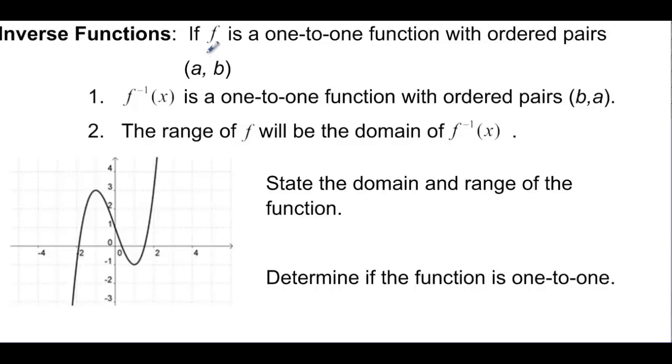So inverse functions. An inverse function has to be one-to-one. And it's going to be a one-to-one function that has ordered pairs (a, b). So the inverse function, and this is inverse function notation right here. And I want you to understand, you've probably heard this before, but f inverse of x is not equal to one over f of x. This doesn't mean f to the negative first. This is just the way we write inverse function notation. When we look at this, if we have a function that's one-to-one with ordered pairs (a, b), then the inverse function is going to have ordered pairs (b, a). And the range of f will be the domain of the inverse function, and the opposite is also true, the domain of f will be the range of the inverse function. And that's why these a and b points switch.